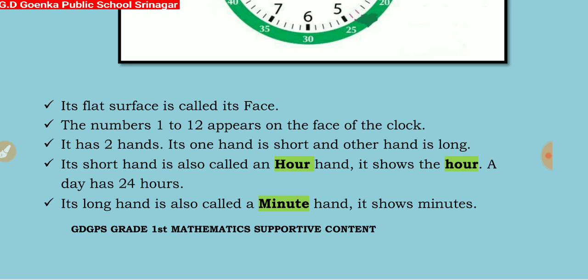The short hand is also called the hour hand. It shows the hour — the hour hand tells us what hour we are in. The long hand is also called the minute hand. It shows minutes. The minute hand tells us about each minute that passes within an hour.